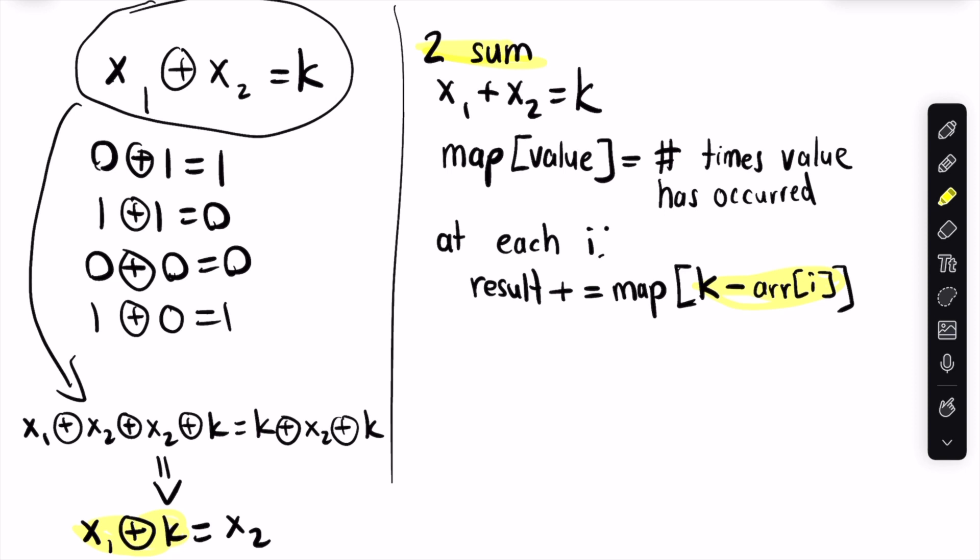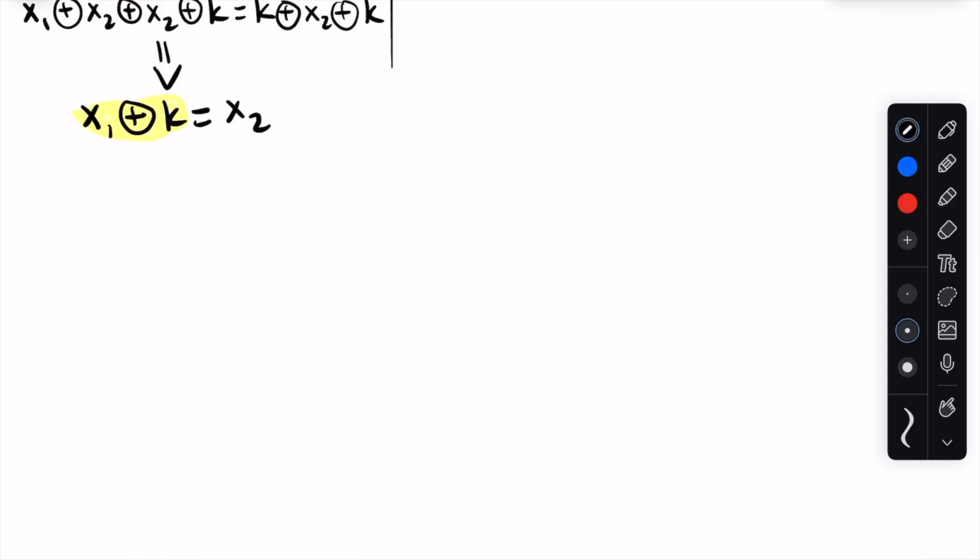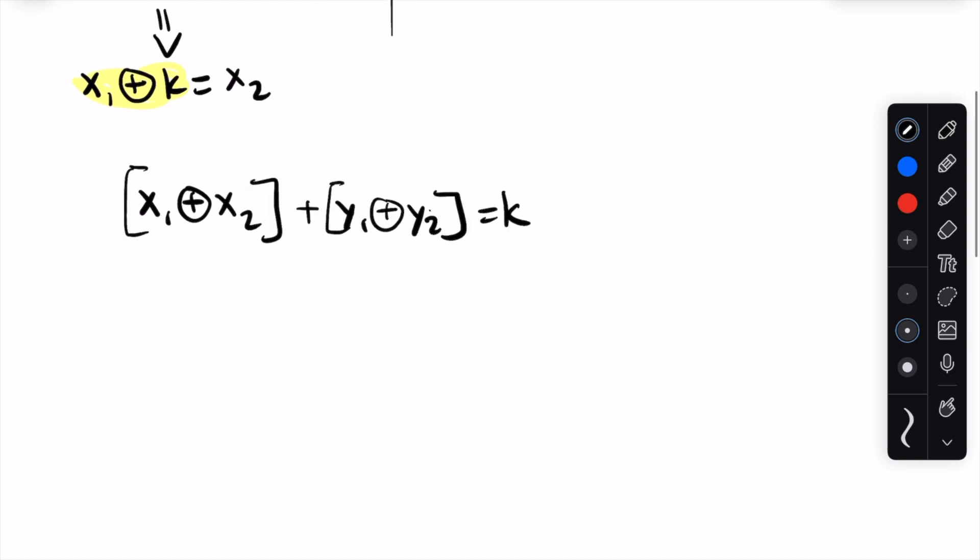But of course, this is not the problem we're solving. We're solving for coordinates in 2 dimensions. So how do we adjust our approach? Well, if we're solving for x1 xor x2 plus y1 xor y2 equals k, then we can call the result of x1 xor x2 some unknown value j. If x1 xor x2 is j, then we would want to look for a corresponding y1 and y2 whose xor results in k minus j. And now, similar to before, let's solve for the complement.